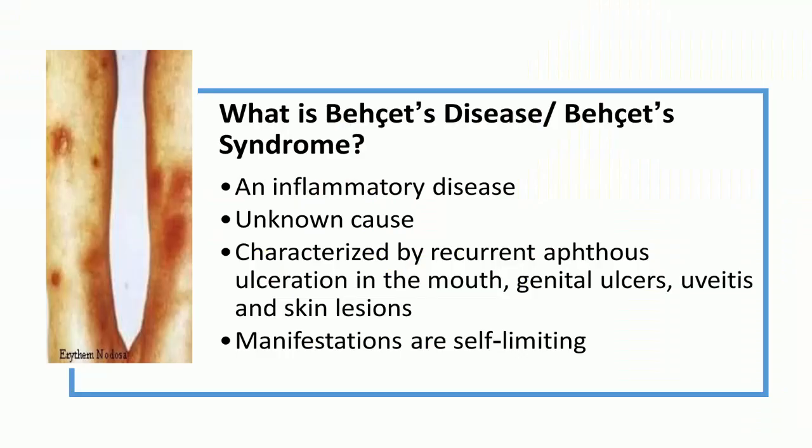What is Bessett's disease or Bessett's syndrome? It is an inflammatory disease of unknown cause, characterized by recurrent aphthous ulceration in the mouth, genital ulcers, uvitus, and skin lesions. The uvitus tends to recur and leads to blindness, whereas the other manifestations are self-limiting.